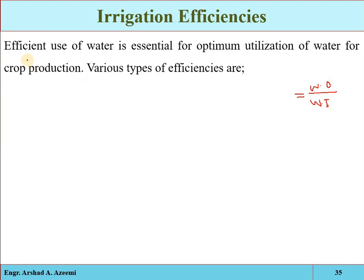There are two main purposes for accounting irrigation efficiencies in irrigation projects. First, to make the irrigation system more efficient and reduce losses. If there is a large difference between output and input values, it means more water is being lost in the system, so methods can be improved to reduce those losses.